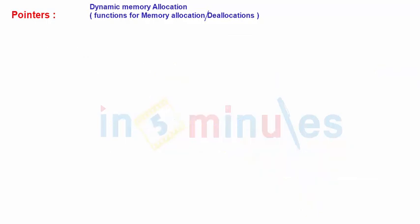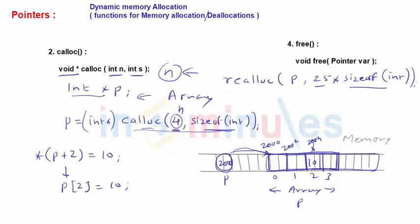The last function we will see is free. Now suppose you allocated memory using calloc or realloc, some memory is allocated and that memory we don't need. We allocated the memory, we input the values, we did some processing with the array or that variable and now we don't need that. We can remove it from memory or we can clean that memory space.